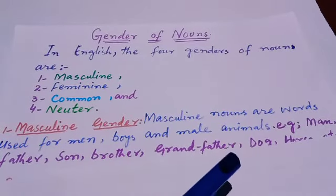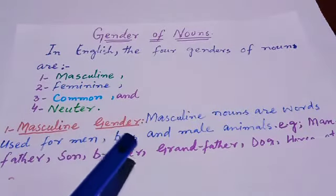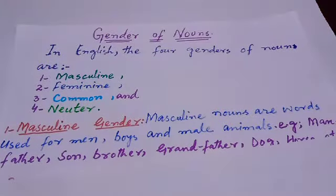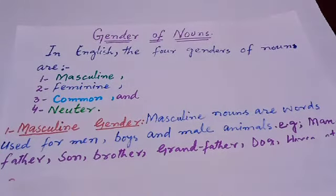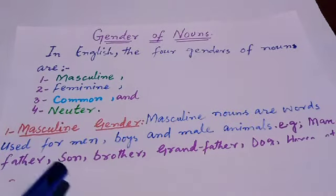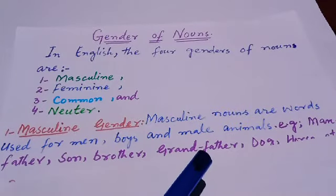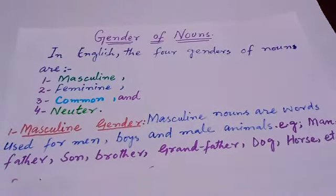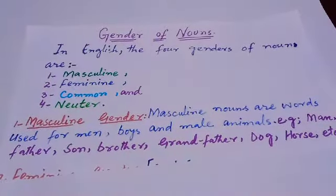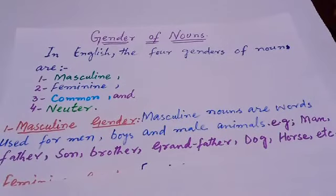For example, masculine gender includes: man, father, brother, grandfather, dog, horse, and etc. These are words used for male persons and male animals.